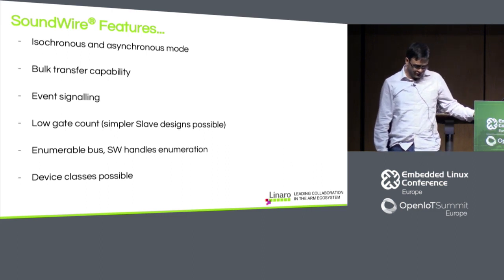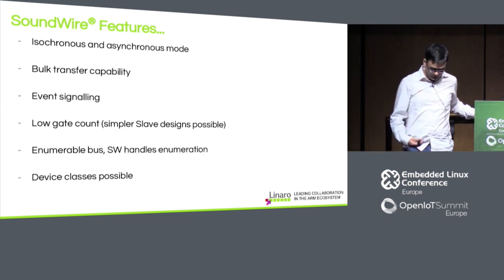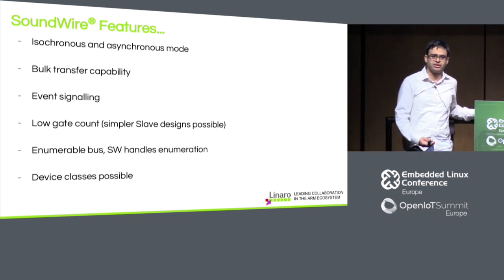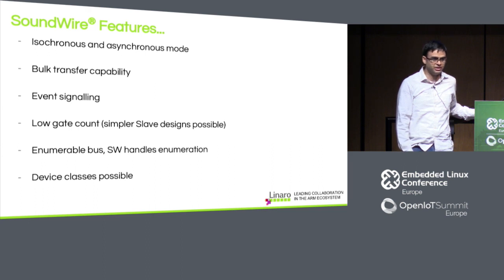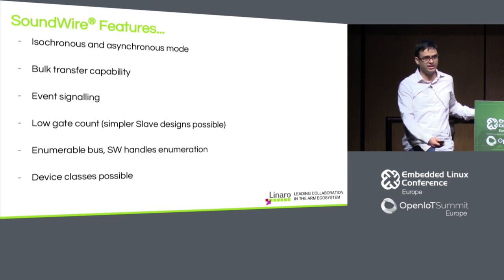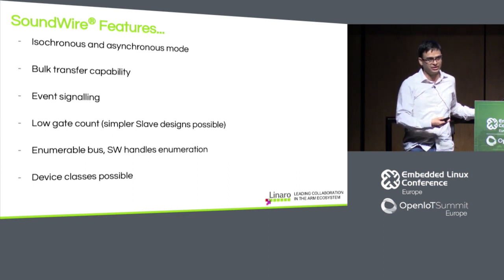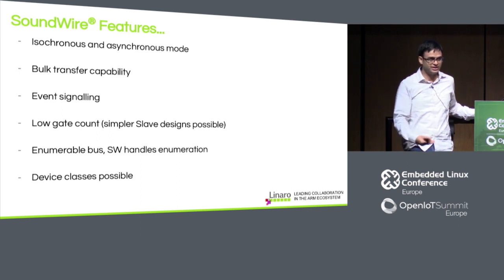Low gate count is another advantage. For the master, many things are mandatory, but for the slave most things are optional. So you can make a very complex slave system, or reduce all optional features and come up with a very simplistic device with a very low gate count. This helps drive simpler implementations, lower cost, and hopefully broader adoption.